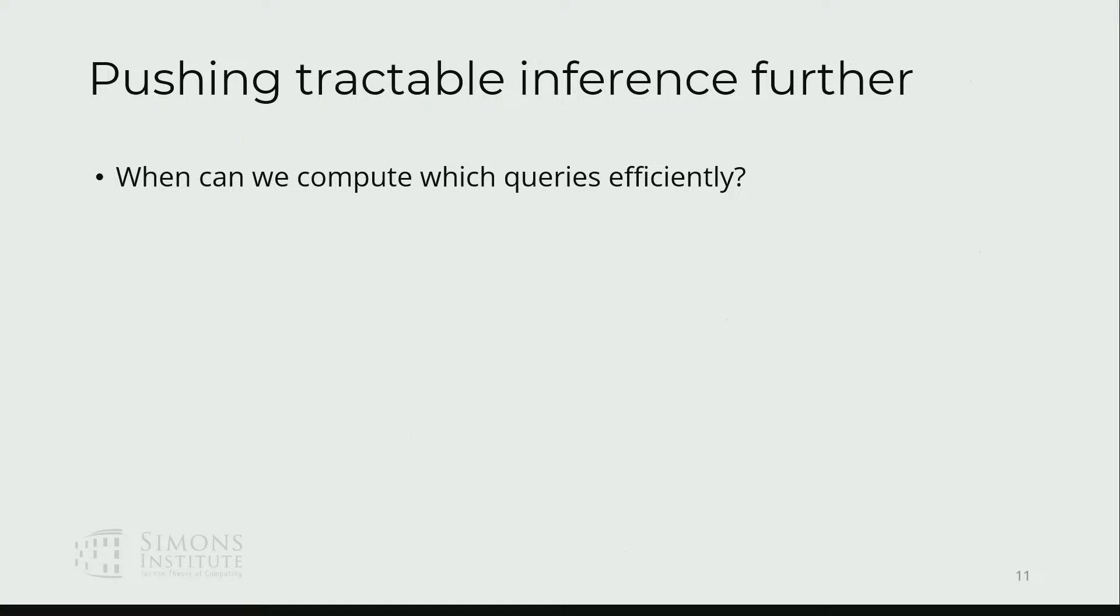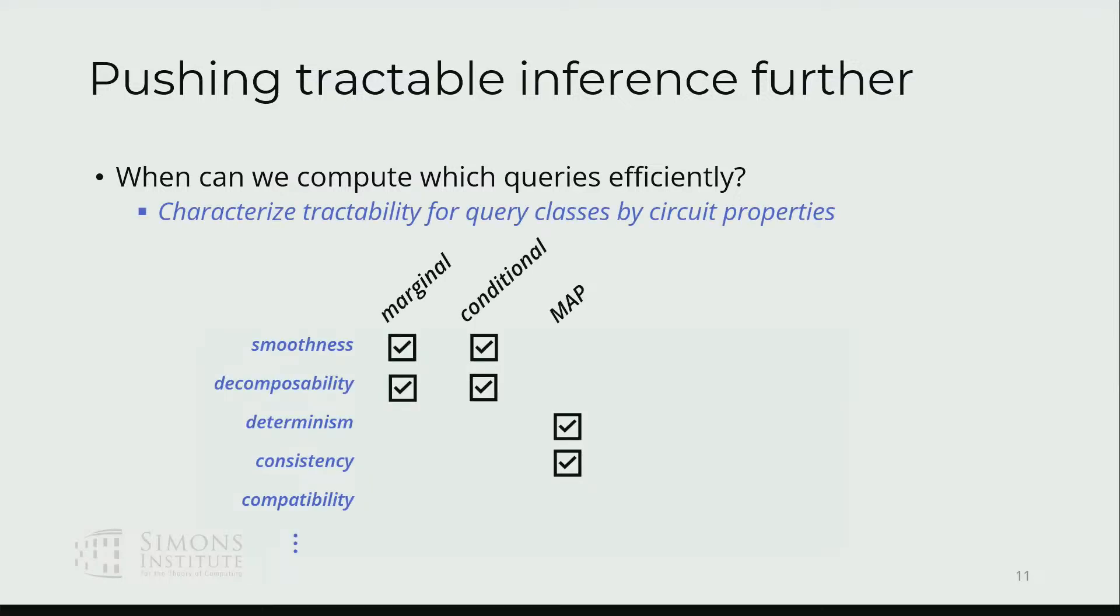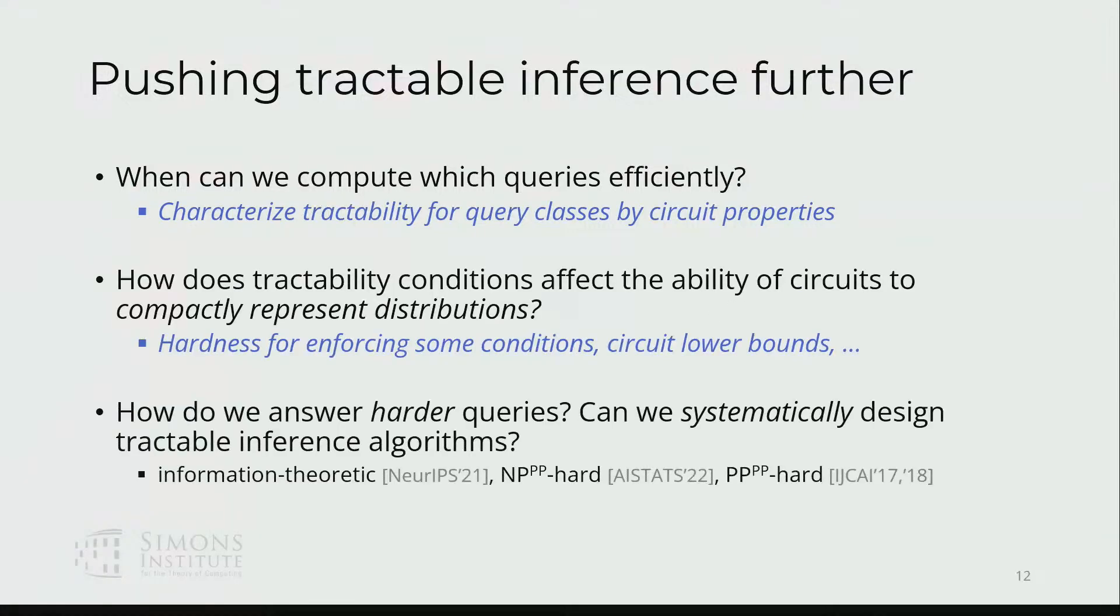Let me wrap it up real quickly. In addition to this kind of trustworthy AI problems to develop a framework, I'm also really interested in how we can characterize this tractable inference and push it further. This sort of involves, for different queries, characterizing what circuit properties we might need to actually answer those efficiently for interesting queries that can be for different complexities.